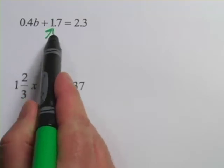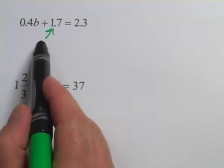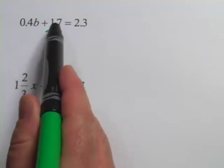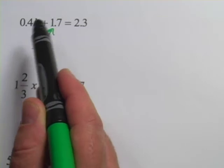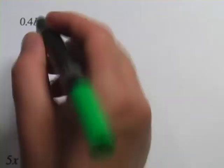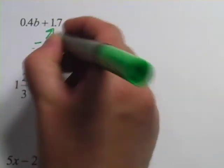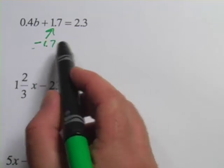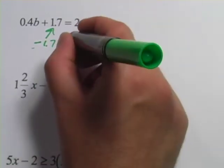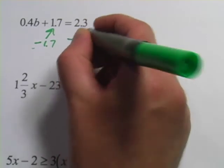This is a plus 1.7. So what's being done to this side of the equation is that 1.7 is being added to it. To undo that, we would do the opposite of adding, and we would subtract 1.7. But the rules of algebra say we have to do the same thing to both sides of the equal sign, so we would subtract 1.7 over here.